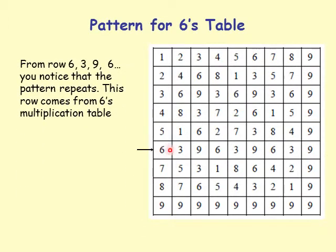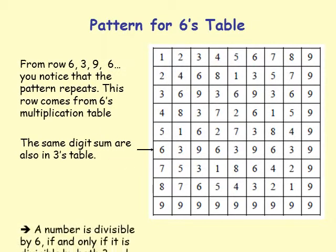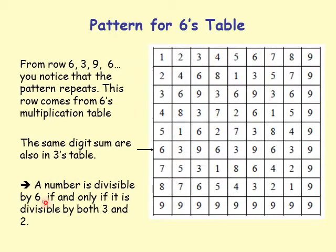Now look at the 6-times table row: it contains 6, 3, 9, 6, 3, 9 — the same three numbers 3, 6, 9 in a different order. All entries in that row are multiples of 6. The 3-times table row contains the same digit sums. A number is divisible by 6 if and only if it is divisible by both 3 and 2 — meaning its digit sum is in {3, 6, 9} and the number is even.